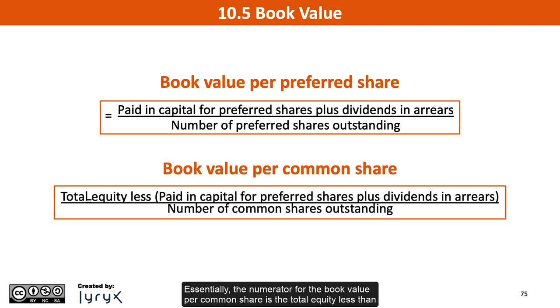Essentially, the numerator for the book value per common share is the total equity less the numerator of the book value per preferred share calculation.